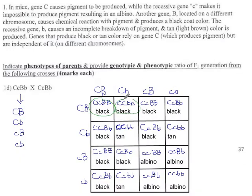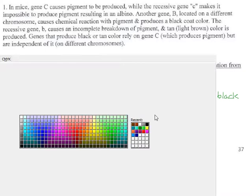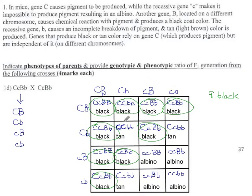Black mice, we have 1, 2, 3, 4, 5, 6, 7, 8, 9. That's a familiar number. 9 black. Are we going to get 9, 3, 3, 1? No, we're not. We're going to get 3 tan.